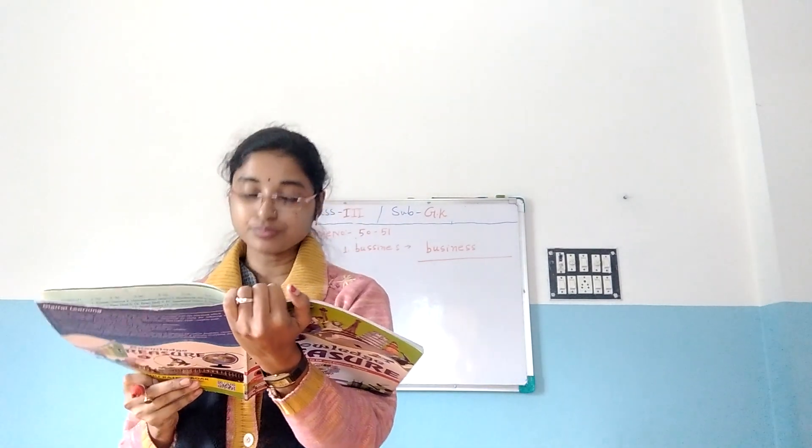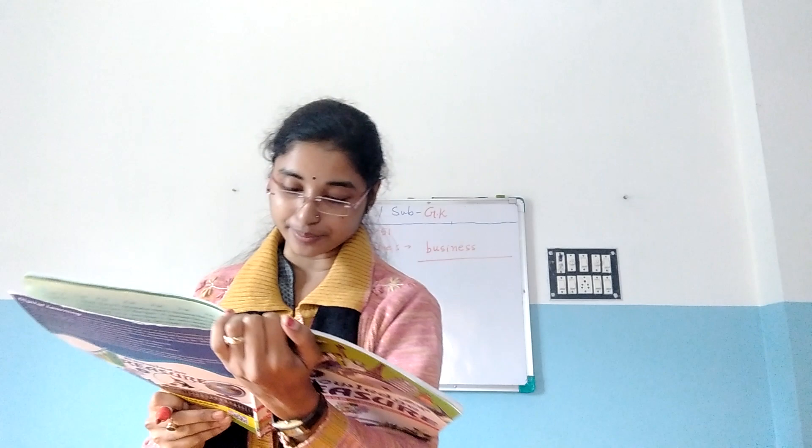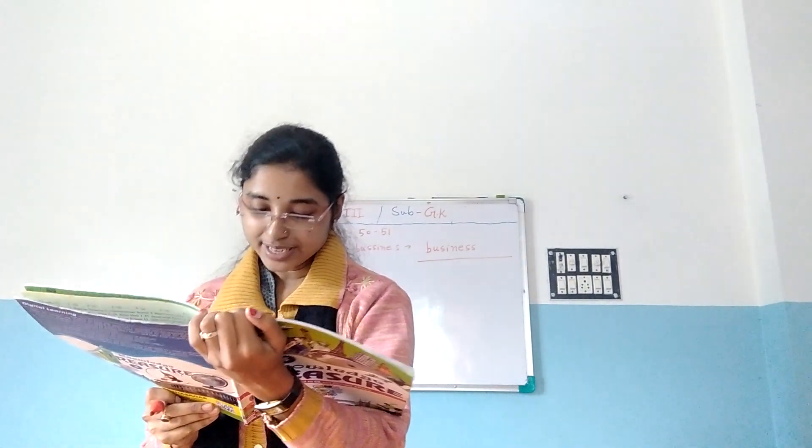Number 14: Forty. The wrong spelling is F-O-U-R-T-Y, not F-O-U-R. The correct spelling is F-O-R-T-Y. Forty. Number 15: Interesting. The wrong spelling is I-N-T-R-E-S-T-I-N-G. The correct spelling is I-N-T-E-R-E-S-T-I-N-G. Interesting.